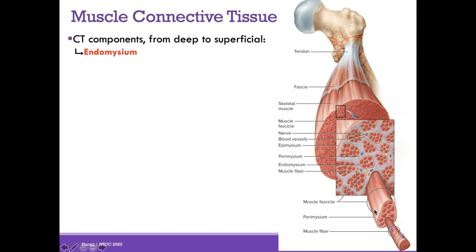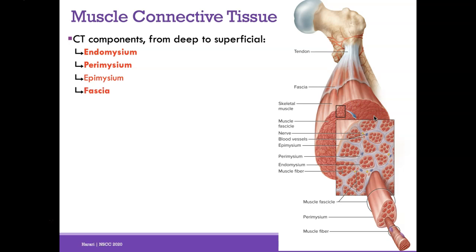The endomysium is the deepest compartment, shown in pink, and it nourishes each and every muscle fiber. It's a loose connective tissue with space for blood vessels and capillaries. The perimysium is what surrounds each fascicle. The epimysium is around the bundle of fascicles that make up a muscle compartment, and it's almost continuous with the fascia — broad sheets of dense irregular connective tissue that groups all fascicles together so they can contract in unison.